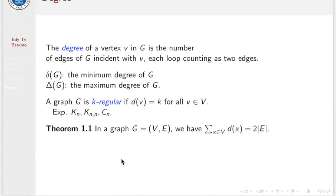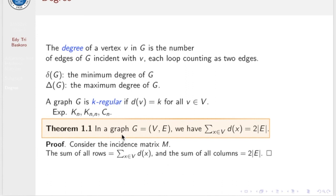Theorem 1.1: in a graph G, the sum of all degrees equals 2 times the number of edges. Proof: consider the incidence matrix of G. The sum of all rows equals the sum of all degrees of the vertices. The sum of all columns equals 2 times the number of edges, because each column represents one edge and has exactly two entries of 1. This proves the theorem.